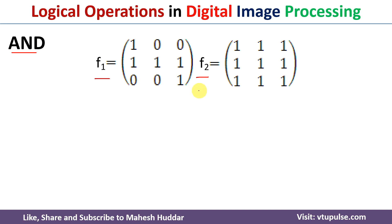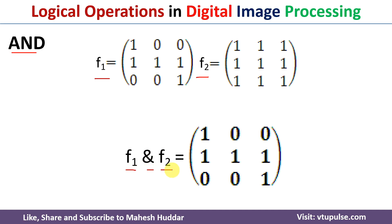First we will discuss how we can perform AND operation on these two fragments F1 and F2, which means we need to perform AND between the corresponding pixels. The first pixel from F1 and F2 are both one, and one AND one equals one. The second pixel is zero in F1 and one in F2, and zero AND one equals zero. Similarly we perform AND between all corresponding pixels.